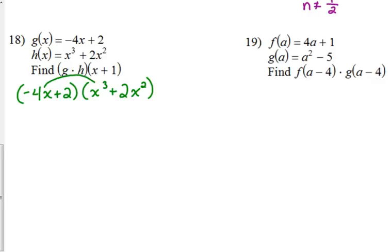Negative 4x plus 2 times x cubed plus 2x squared. I'm going to do that part first. So negative 4x times x cubed, negative 4x to the fourth. Outside, negative 4 times 2, negative 8, x times x squared, x cubed. Inside, 2 times x cubed, 2x cubed. Last, 2 times 2 is 4, and there's an x squared on it. What did this happen? Multiplying g times h, and I foiled it out.